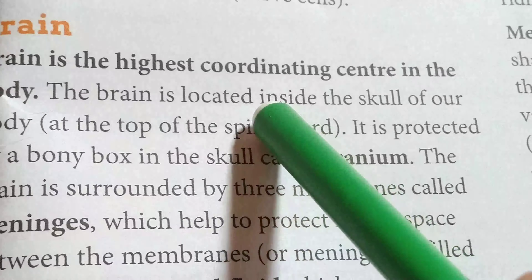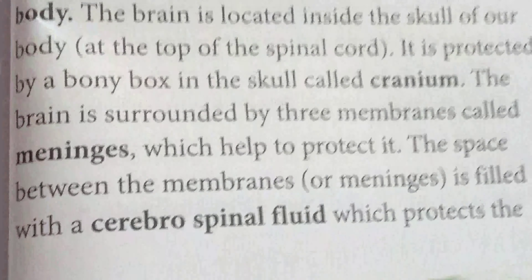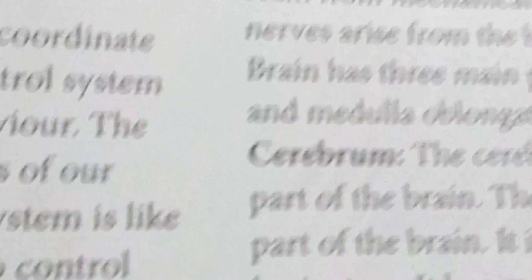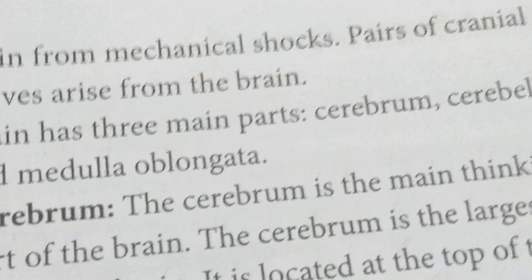The brain is surrounded by three membranes called meninges, which help to protect it from internal hemorrhage or injury. The space between the membranes is filled with cerebrospinal fluid, which is a kind of liquid that helps to reduce friction between the three membranes and protects the brain from mechanical shock.